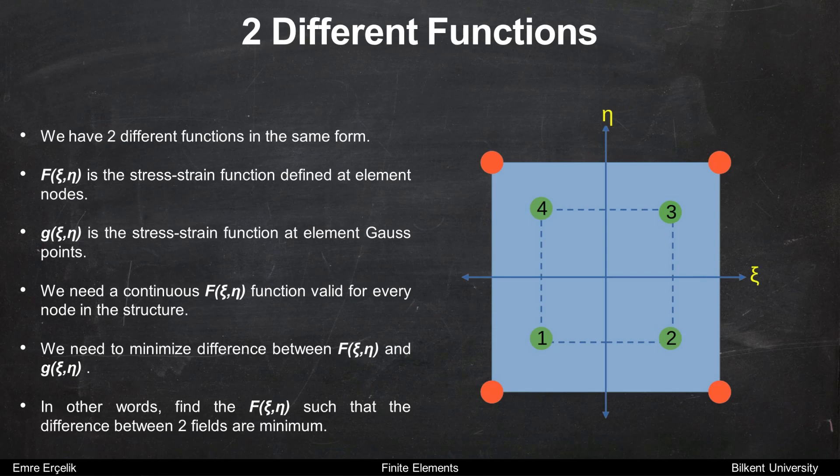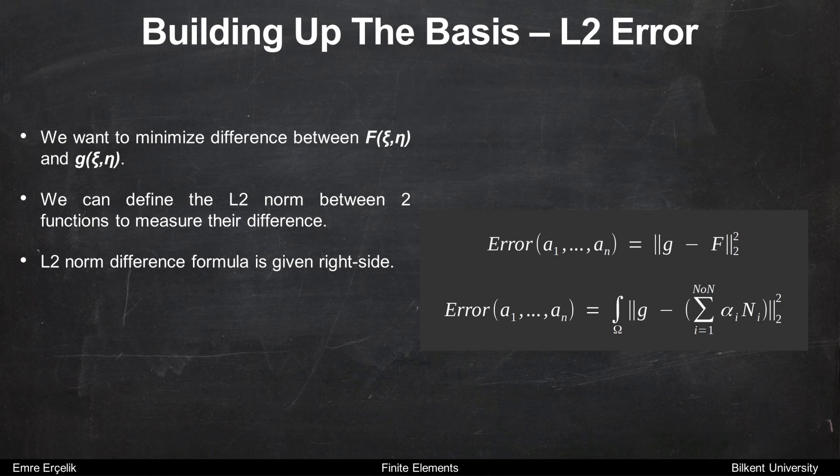Now we have two different functions in the same form. F is the stress-strain function defined at element nodes. G is the stress-strain function at element Gauss points. We need a continuous F function valid for every node in the structure. To do that, we need to minimize the difference between F and G. In other words, find the F function such that the difference between two fields are minimal.